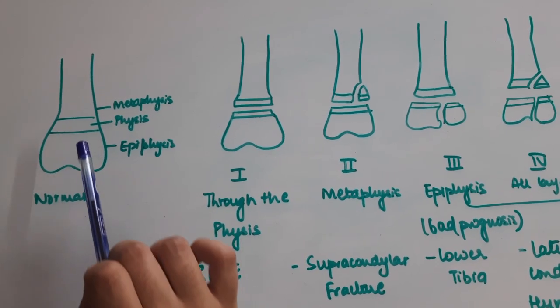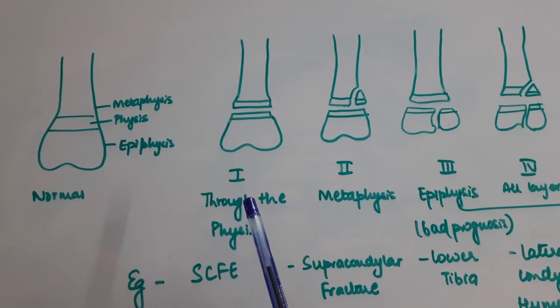When a fracture occurs it can be classified into five Salter Harris types.